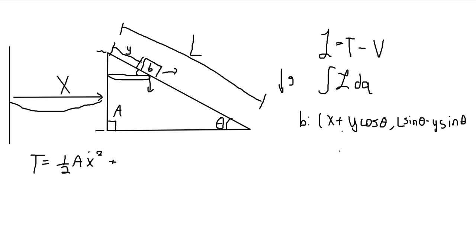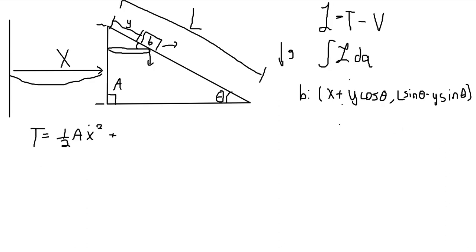I think that makes sense. So this is the coordinates of B, the positions of B. And so we can find the velocity of B. So B dot will just be X dot plus Y dot cosine theta. And then here, L sine theta is just constant. So we get minus Y dot sine theta.